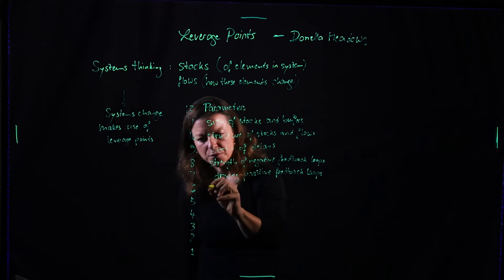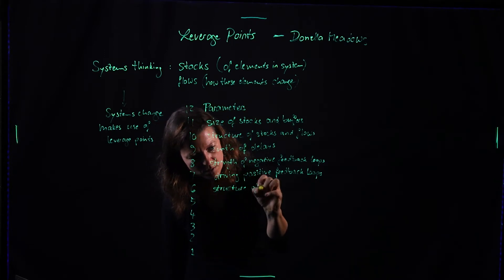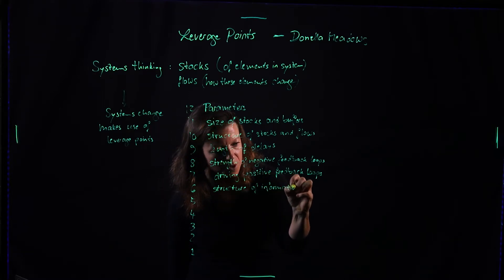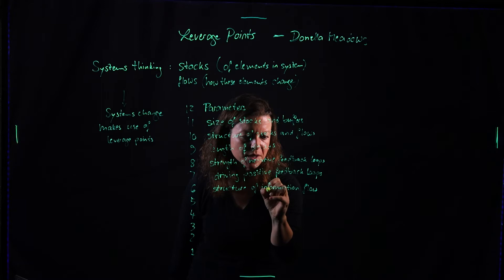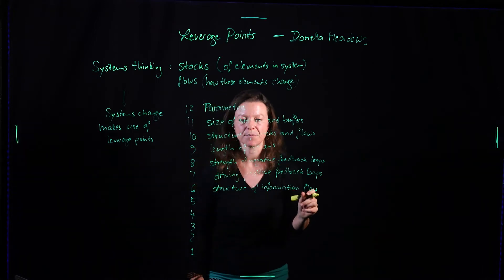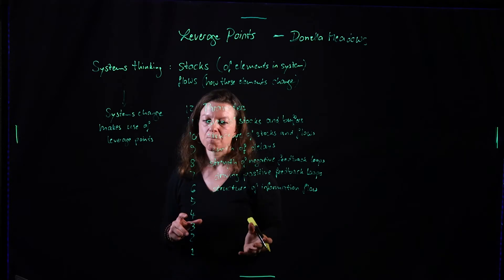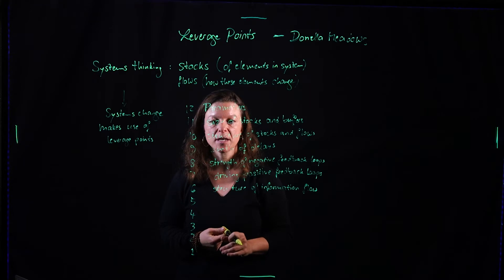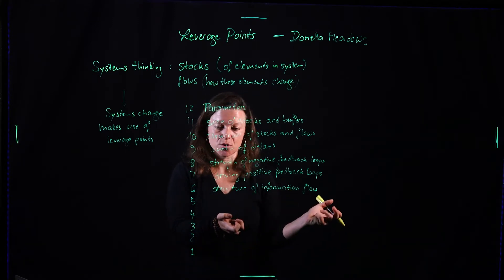Number six, structure of information flow. As we come higher and higher, these get harder to change. Structure of information flow in a system can be something like how management informs their employees of decisions they're making for the company. Changing how information propagates through a system and how things communicate, that requires a lot more change in the organizational structures.